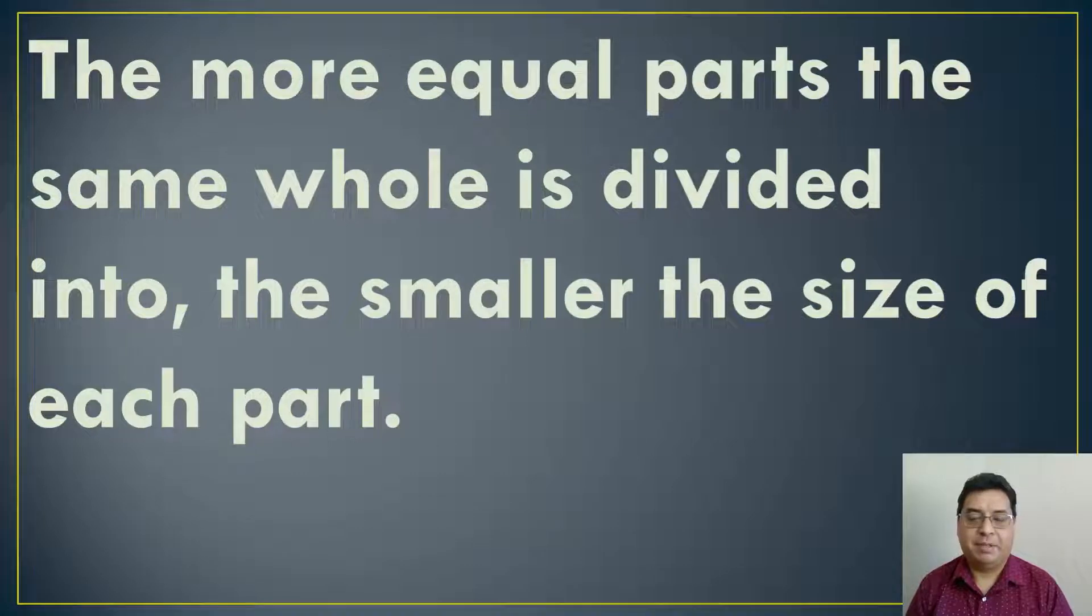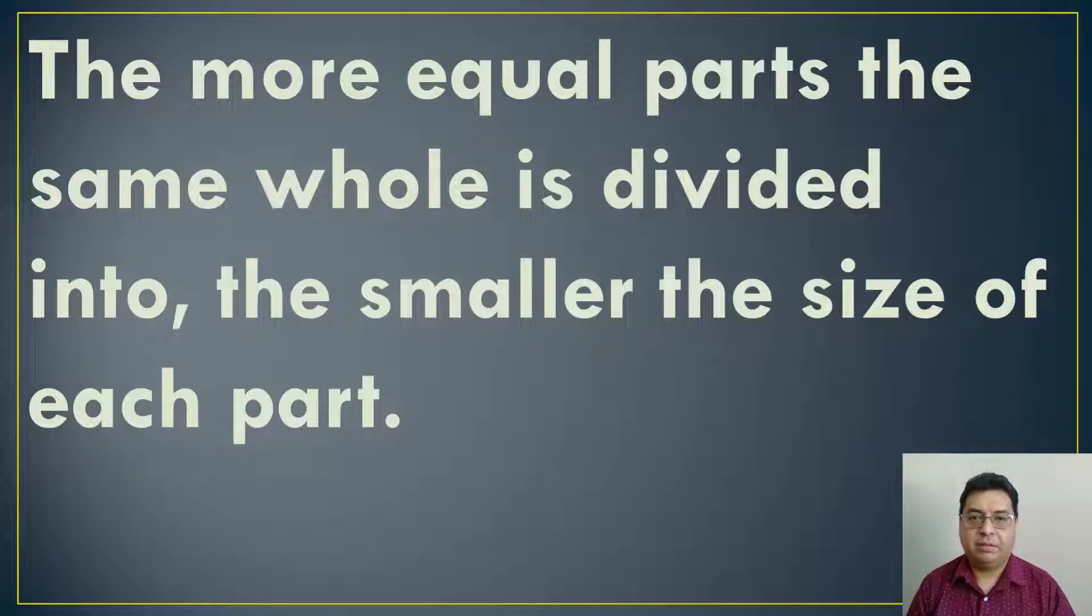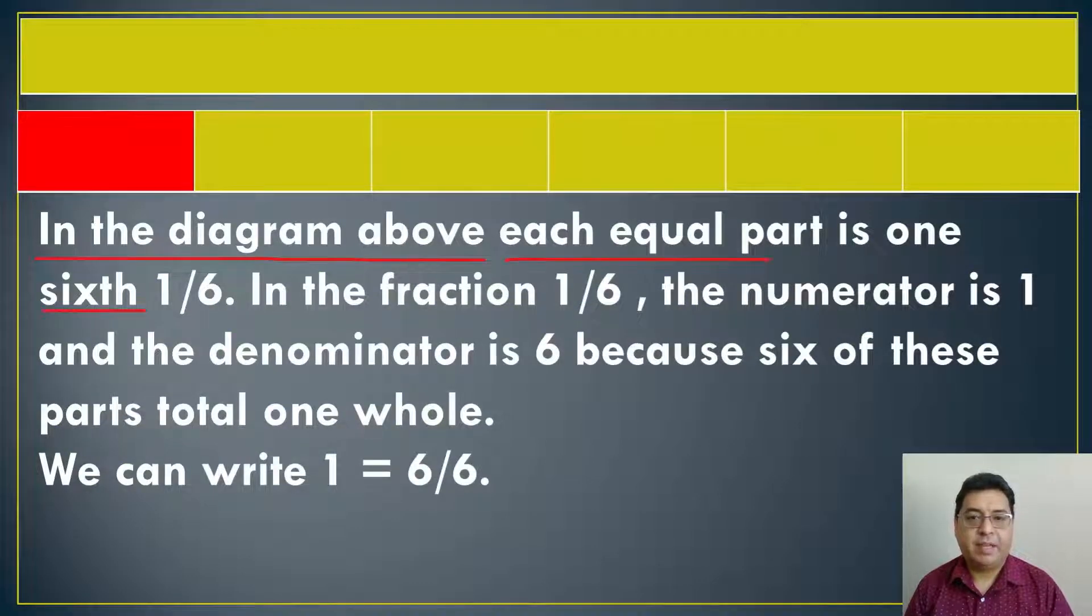So let me give a little bit of an explanation here. The more equal parts the same whole is divided into, the smaller the size of each part. In the diagram above, each equal part is one-sixth, and that's talking about this one here. In the fraction one-sixth, the numerator is one and the denominator is six because six of these parts total one whole. So you can write one equals six over six.